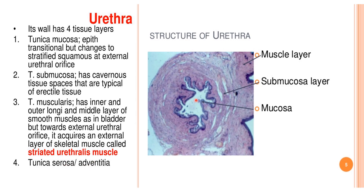This diagram shows the lumen at the center. Near the lumen is the mucosa lined by epithelium, then the submucosa layer, then the muscle layer, and finally the adventitia or serosa layer on the outside.